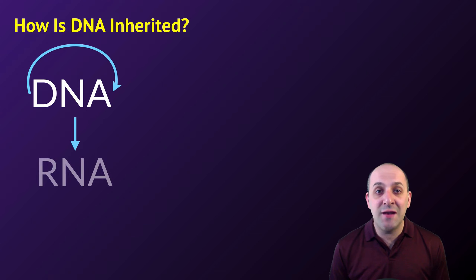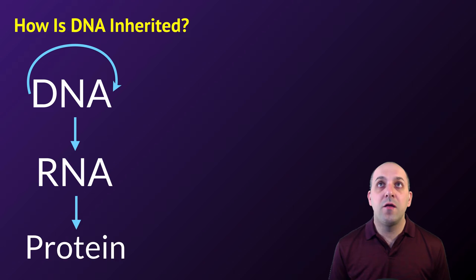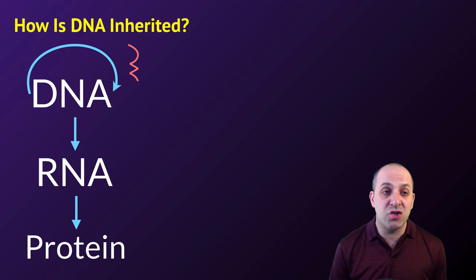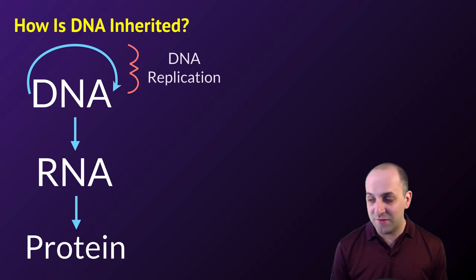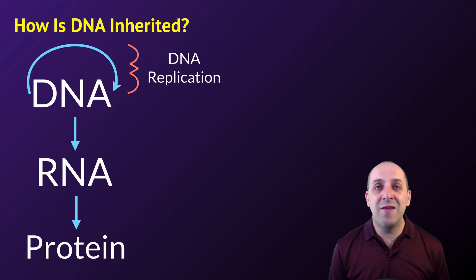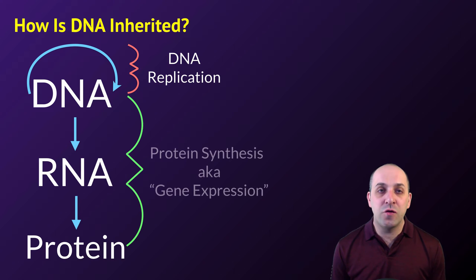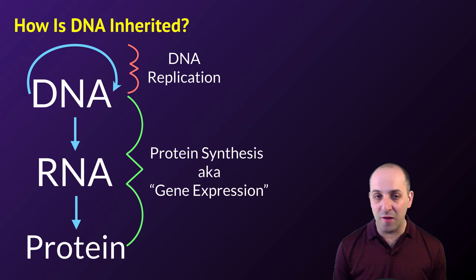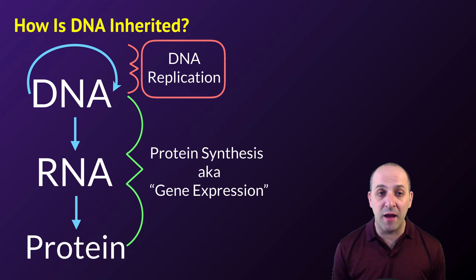Just as a reminder, DNA serves two roles in the cell. DNA is the molecule that's passed from generation to generation — that's DNA replication. And then the information in DNA is used to direct the production of proteins by the cell. But we're going to focus on the first one today, DNA replication.